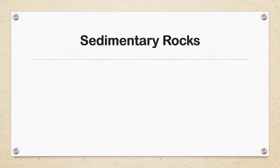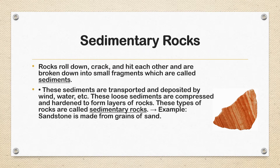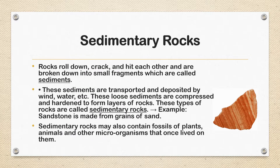Going towards sedimentary rocks — rocks roll down, crack and hit each other and are broken down into smaller fragments called sediments. These sediments are transported and deposited by wind, water, etc. These loose sediments are compressed and hardened to form layers of rocks called sedimentary rocks. Example: sandstone is made from grains of sand. Sedimentary rocks may also contain fossils of plants, animals, and other microorganisms that once lived on them.